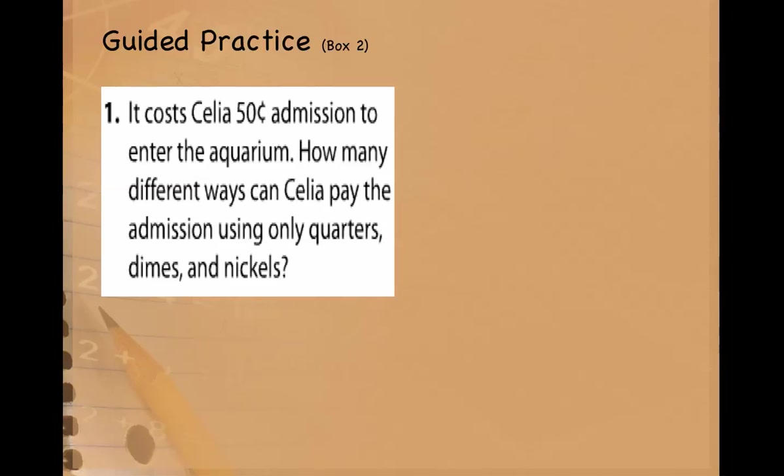Guided practice. It costs Cecilia 50 cents admission to enter the aquarium. How many different ways can Cecilia pay the admission using only quarters, dimes, and nickels? For this, I'm going to use a table. And a table is going to help me to create my organized list.